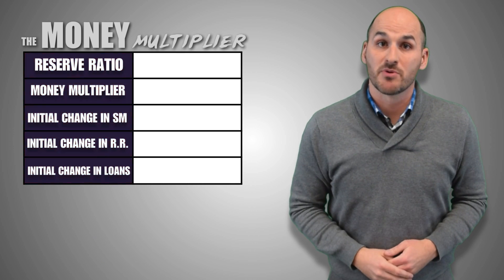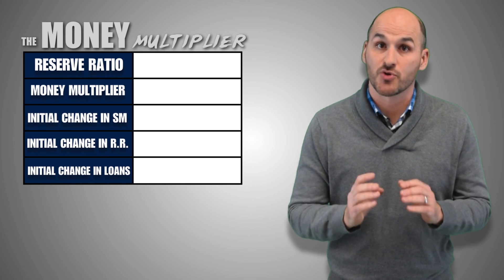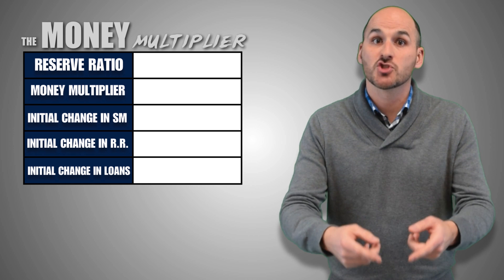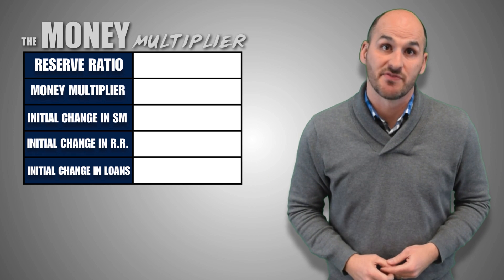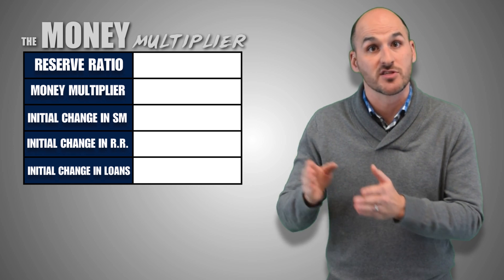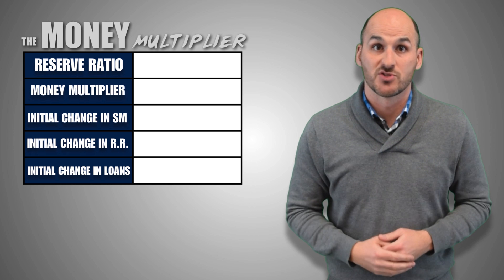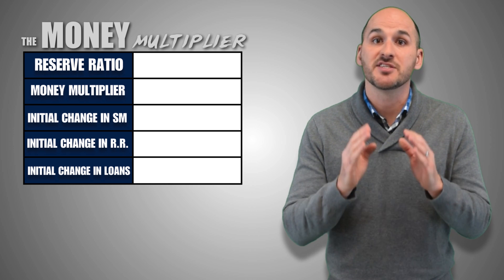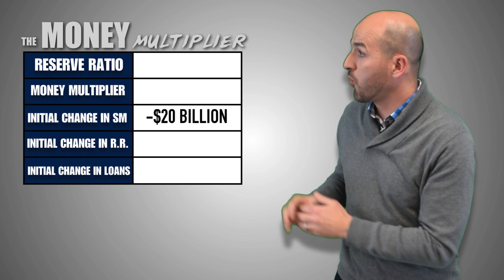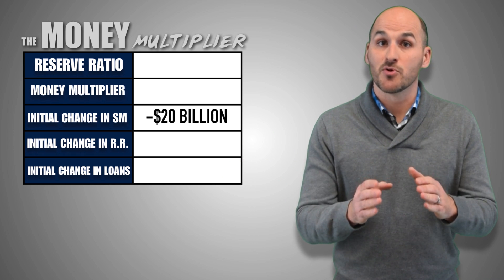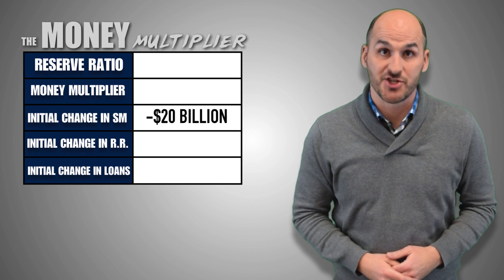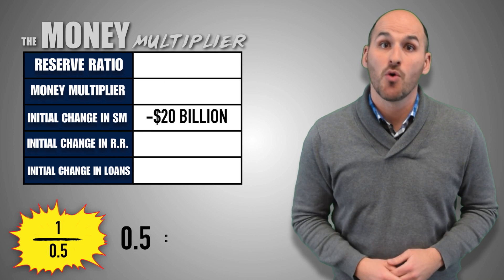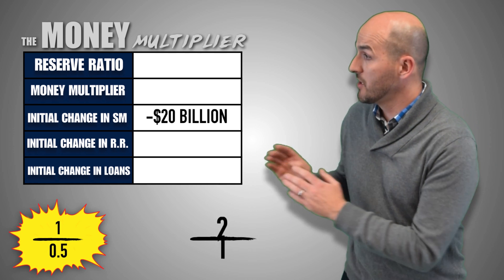Now suppose that the Federal Reserve sells $20 billion worth of treasury bonds to investors in the open market. When the Fed sells the T-bonds, it takes $20 billion directly out of the hands of investors and transfers those funds to the Treasury. As a result, the open market operation conducted by the Fed initially decreases the money supply by $20 billion. Now assume that at the time of the open market operation, the reserve ratio is 50%, and by using the reserve ratio, we can determine that the money multiplier is 2.